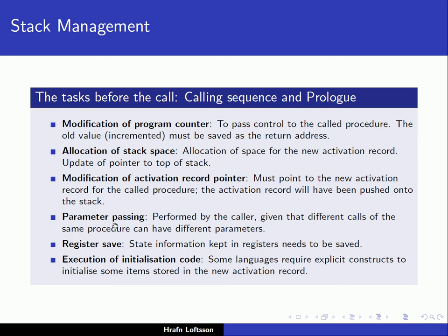We need to pass parameters from the caller to the activation record of the callee. We need to save registers, because there is state information kept in registers that needs to be preserved. In some cases there is also execution of initialization code, as some languages require explicit constructs to initialize items stored in the new activation record, which would be done in the prologue.